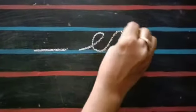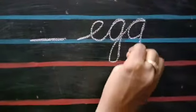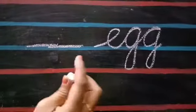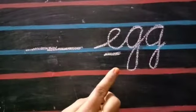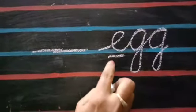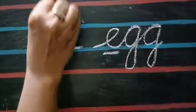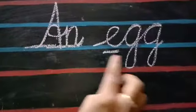Children, look at the board. Now, dash — EGG. What should I write here? A or AN? Check the first letter of the word. Is E a vowel? Yes. If the first letter of the word is a vowel, then you should write AN. AN EGG.